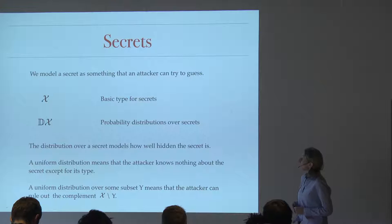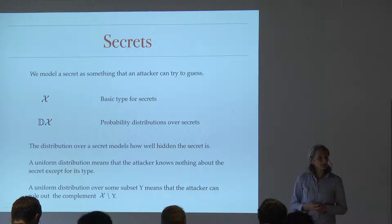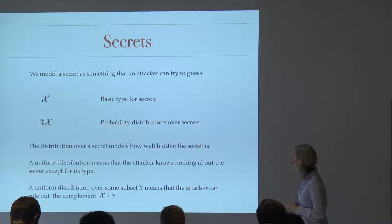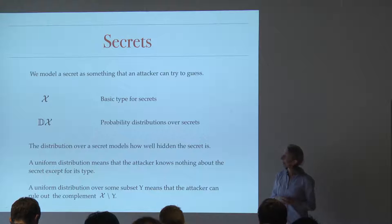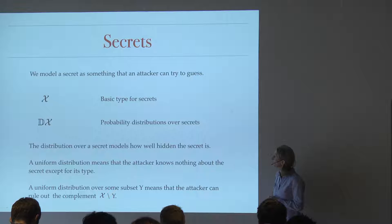Let's start at the beginning — this is the tutorial part of the talk. When you're talking about confidentiality, you've got to have this idea of a secret. What we're going to do is model a secret as something that an attacker can try to guess. We'll use chi for the basic type for secrets — imagine maybe 256 bits, however many bits you want to keep secret. That's the range over which you can choose your secret.